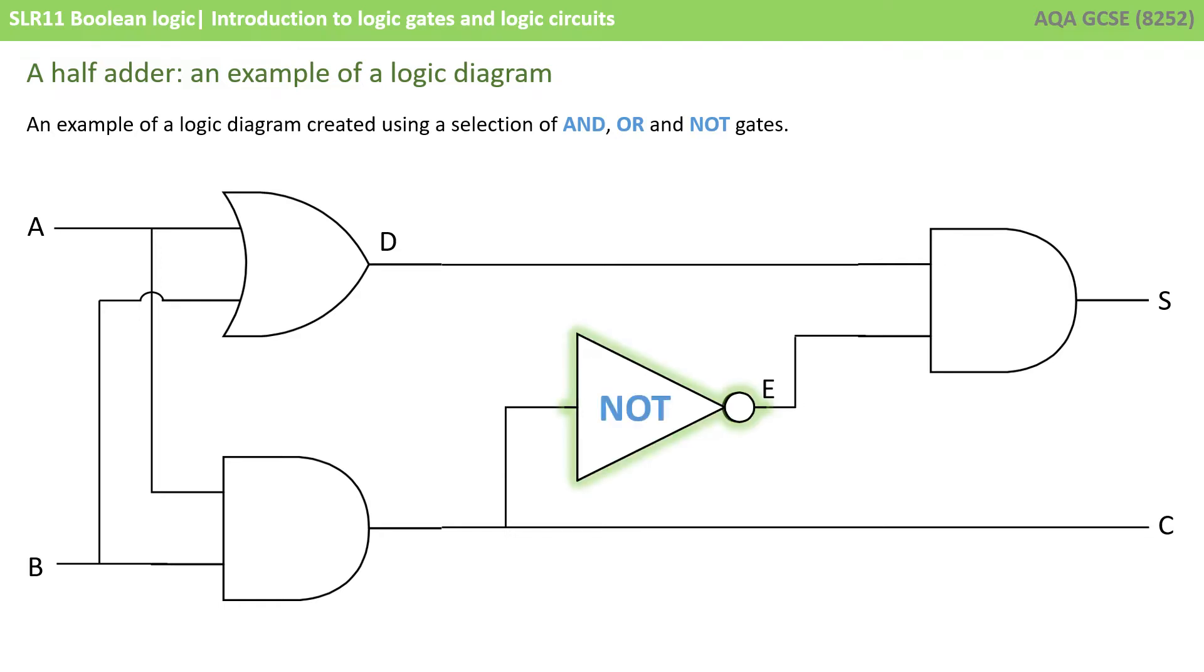There's a NOT gate. There's two examples of an AND gate. And there's an OR gate. Let's explore what happens to the signal entering and leaving each of these gates to better understand how they work.